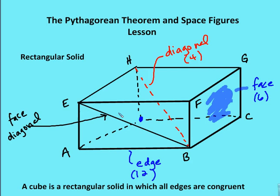I also have face diagonals. A face diagonal is a diagonal across the surface of a face of the rectangular solid. Just as I have six faces, I also have 12 face diagonals. I have four true diagonals: HB, GA, EC, and the unlabeled point to F. The face diagonals include EB, AF, HA, E to the unlabeled point, HC, G to the point, FC, GB, the point to B, AC, HF, and EG — completing the 12 face diagonals.